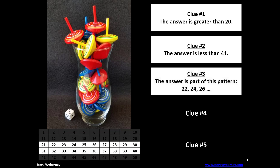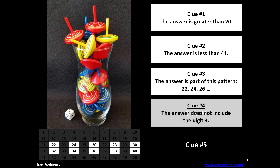Clue 3: the answer is part of this pattern — 22, 24, 26 — so I know that these numbers will still be on the chart. Clue 4: the answer does not include the digit 3, so I know that all of these numbers will be eliminated.